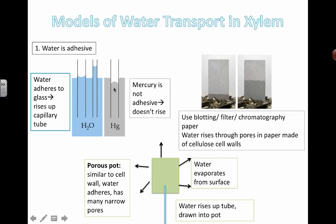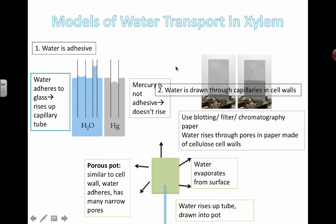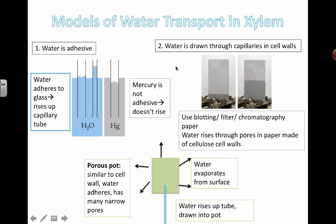Water has these special properties that allow it to do that. If you use something like mercury, for example, it doesn't have these same hydrogen bonding adhesive properties, so mercury does not actually rise. And so that's one model of water transport and how that works in xylem.